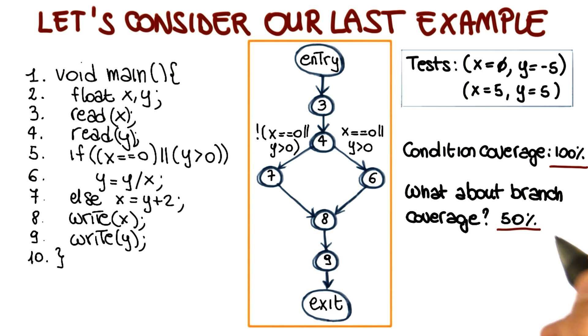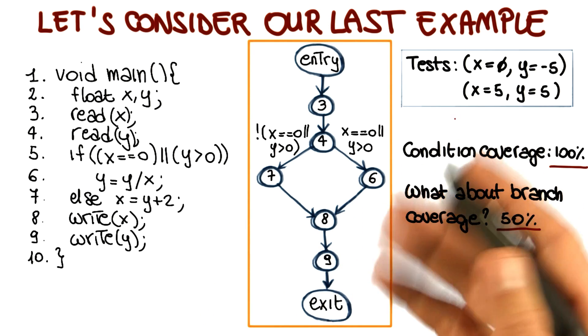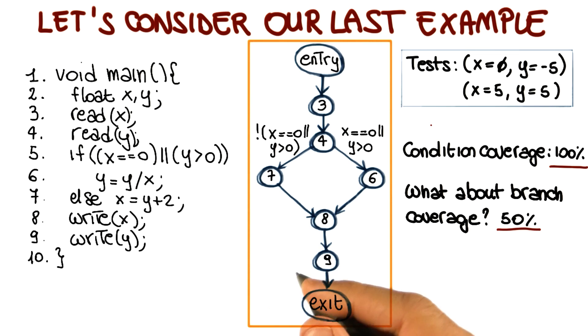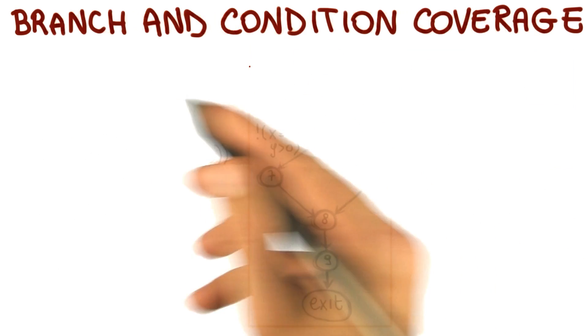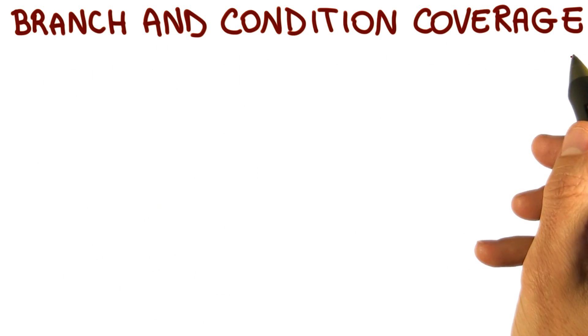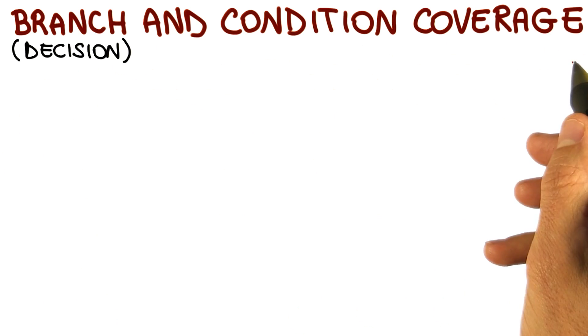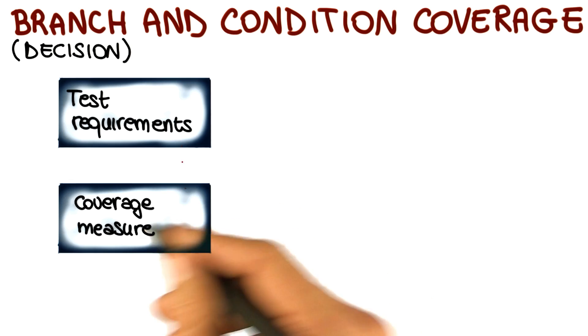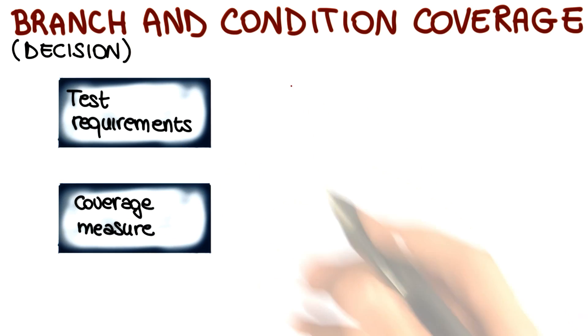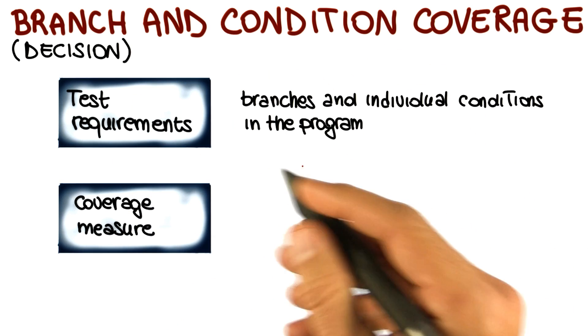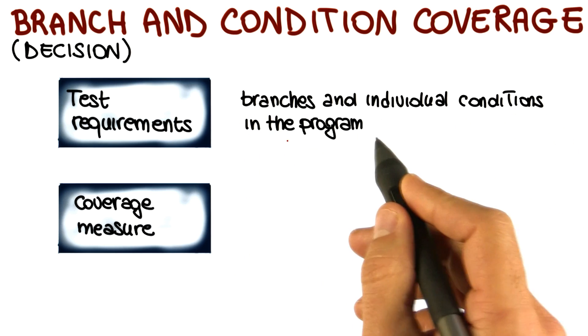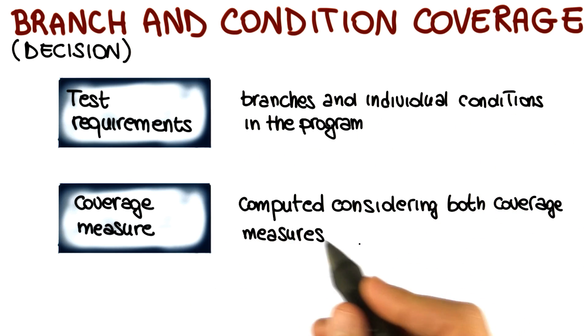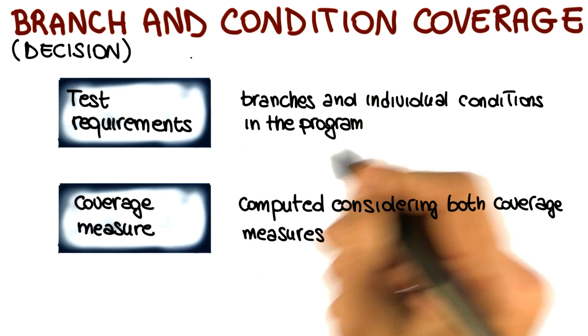This is why normally the two criteria we just saw, decision coverage and condition coverage, are considered together. The resulting criterion is called branch and condition coverage, or decision and condition coverage. At this point, the test requirements and coverage measure should be straightforward because they consider the two criteria together. The requirements include all the branches and individual conditions in the program, whereas the coverage measure is computed considering both branch coverage and condition coverage.